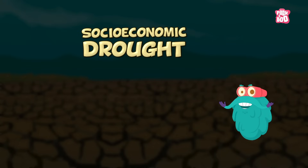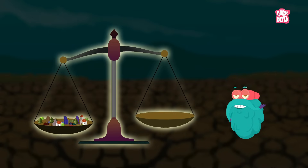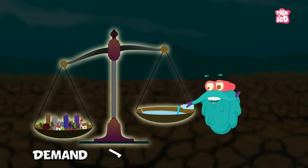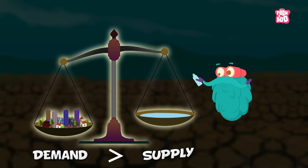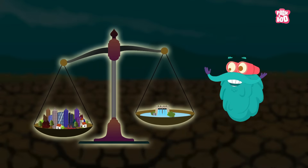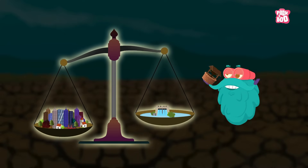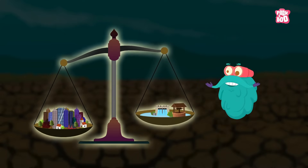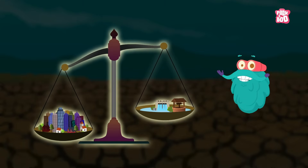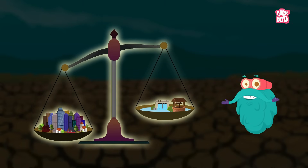Socio-economic Drought occurs when the demand for water exceeds the supply. Examples of this could be when a state requires a lot more water than is produced from hydroelectric stations or underground wells.